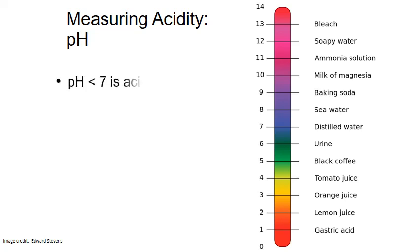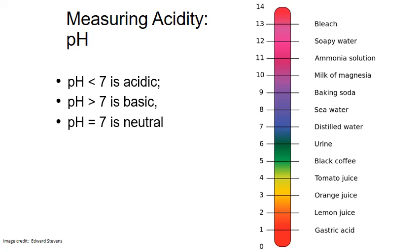pH values below 7 represent acidic solutions. The farther below 7 the pH is, the more acidic the solution. pH values above 7 indicate basic solutions, and again, the farther above 7 the pH is, the more basic the solution. When pH equals 7, the solution is considered neutral, or not strongly acidic or basic.